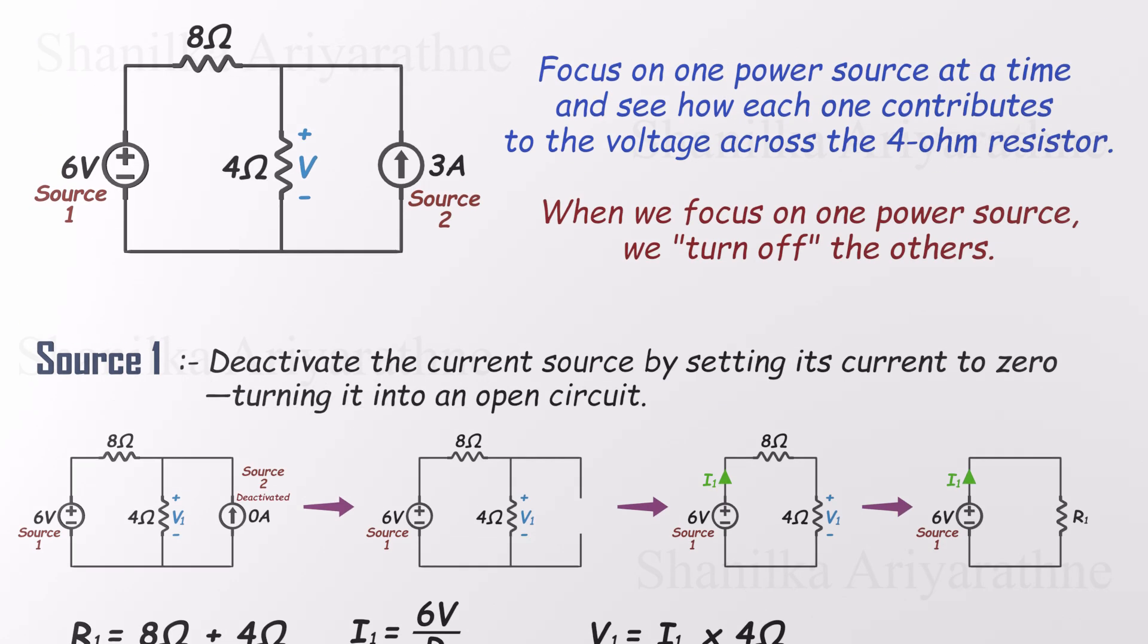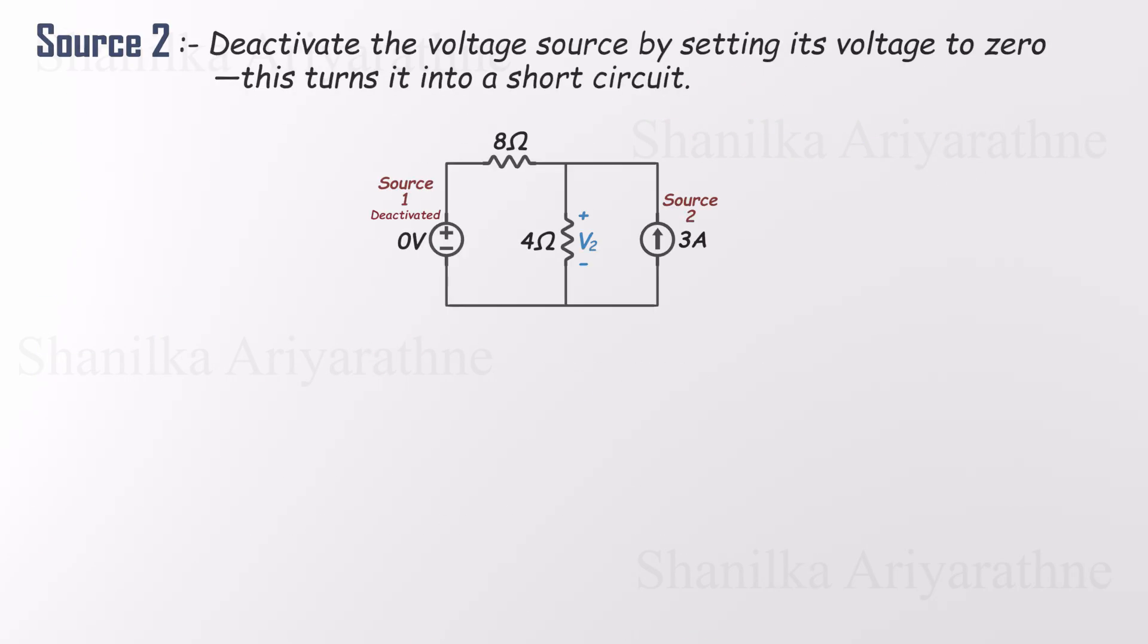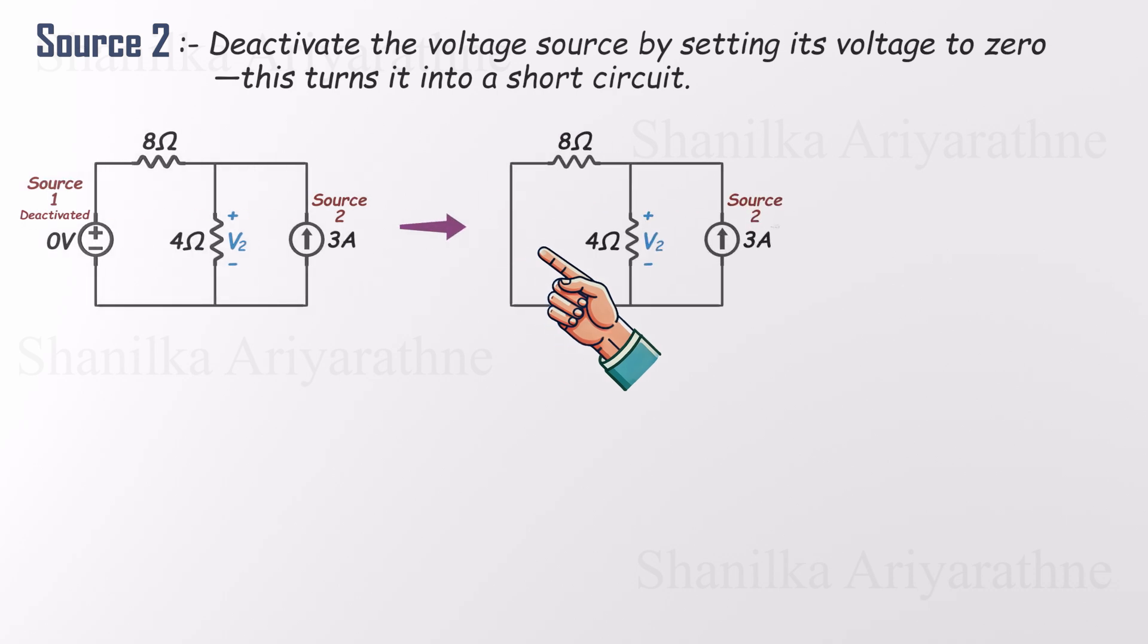We're not done yet. There's still one more power source to analyze, the current source. To isolate it, we deactivate the voltage source by setting its voltage to zero. That turns it into a short circuit, a simple wire connecting two points. Now when the voltage across a branch is zero, it might seem like that part of the circuit does nothing. But don't forget, current can still flow through it. So we don't remove it, we short it.